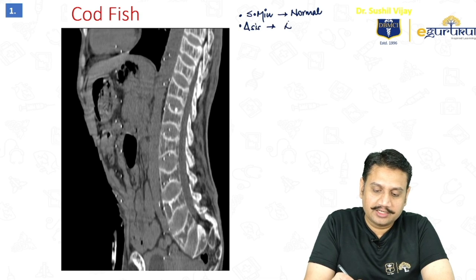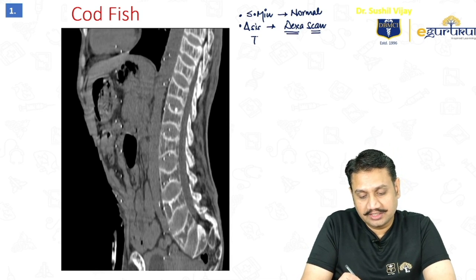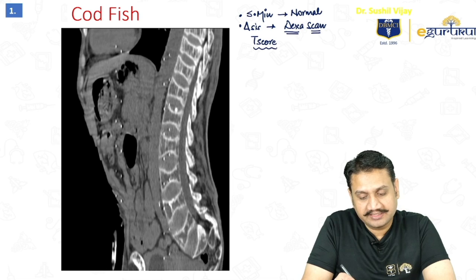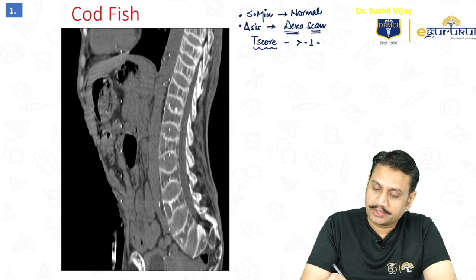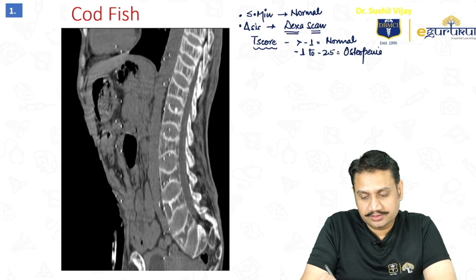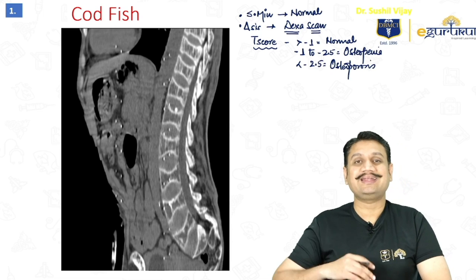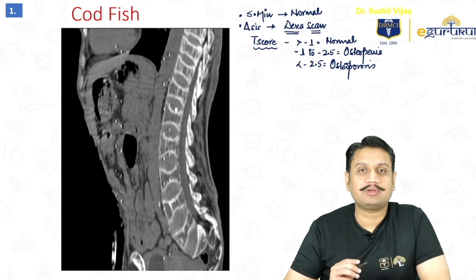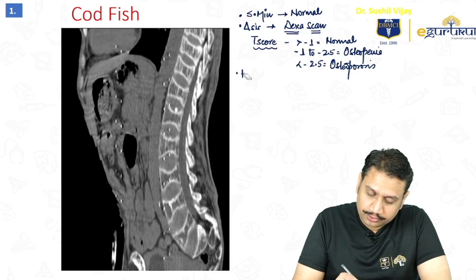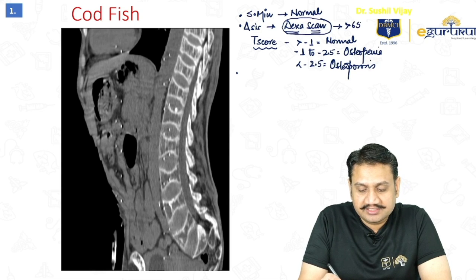The gold standard diagnosis is DEXA scan — dual energy X-ray absorptiometry — where bone mineral density is measured in terms of T-score. When the T-score is better than minus one, we call it normal bone. When the score is between minus one to minus 2.5, it is known as osteopenia. When the score falls below minus 2.5 standard deviations compared to a normal person, it is definitive osteoporosis. DEXA is recommended for every female above 65 years routinely.